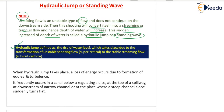Hydraulic jump is defined as the rise of water level which takes place due to transformation of unstable shooting flow — that is supercritical flow — to the stable streaming flow, that is subcritical flow. When hydraulic jump takes place, a loss of energy occurs due to formation of eddies and turbulence.